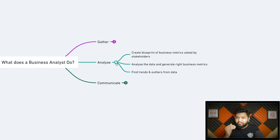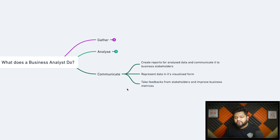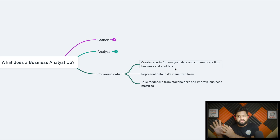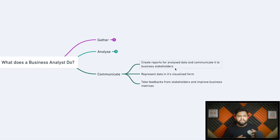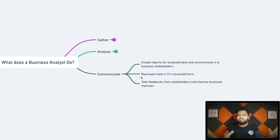The most important part is communication — communicating your findings: metrics, outliers, trends — to end users and stakeholders in the right way. Create reports from analyzed data and communicate them to business stakeholders. Always assume they are non-technical people who are not data persons; that's why they're reaching out to you. As a data person, your responsibility is to communicate things in the right fashion. Represent data in its visualized form — dashboards, pie graphs, bar charts, line charts, heat maps — anything easily understandable.